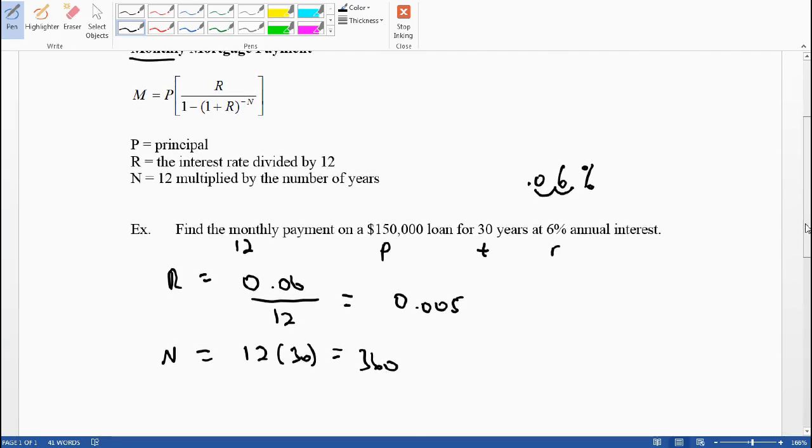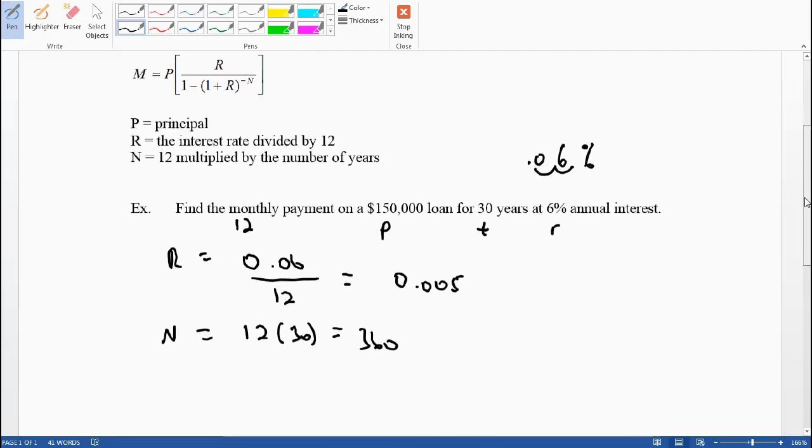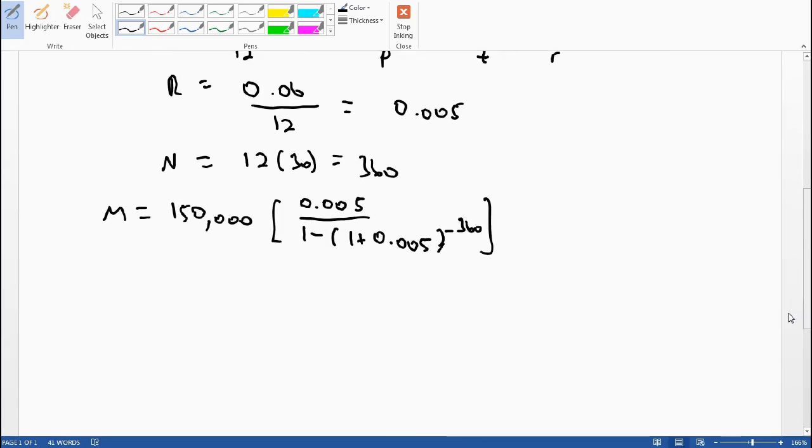Now I'll take this formula and substitute numbers in. P is 150,000, bracket. We found R to be 0.005 over one minus parentheses one plus R again, 0.005, and that's raised to the negative N. The negative exponent, big N we found is 360.